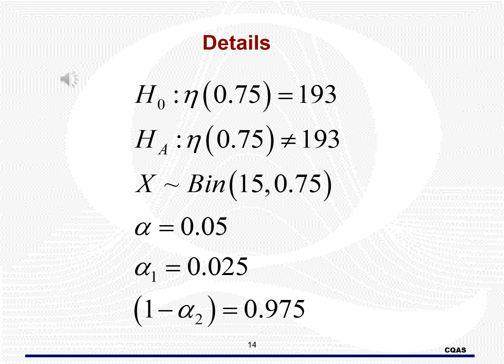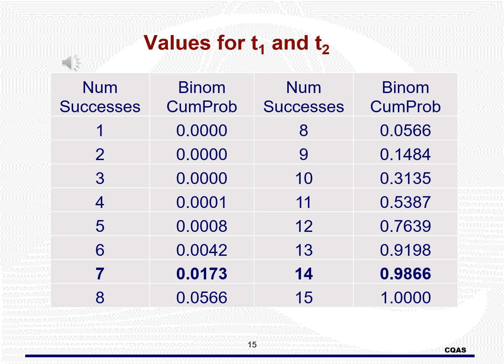We are hypothesizing that the 75th percentile equals 193 versus not equal. We assume that under the null, the distribution is binomial with n equals 15 and pi equals 0.75. We would also like alpha1 and alpha2 to be as close to 0.025 as possible. Using the binomial distribution, the closest probabilities to 0.025 and 0.975 are 0.0173 and 0.9886. This gives us values of 7 and 14 for T1 and T2 respectively.